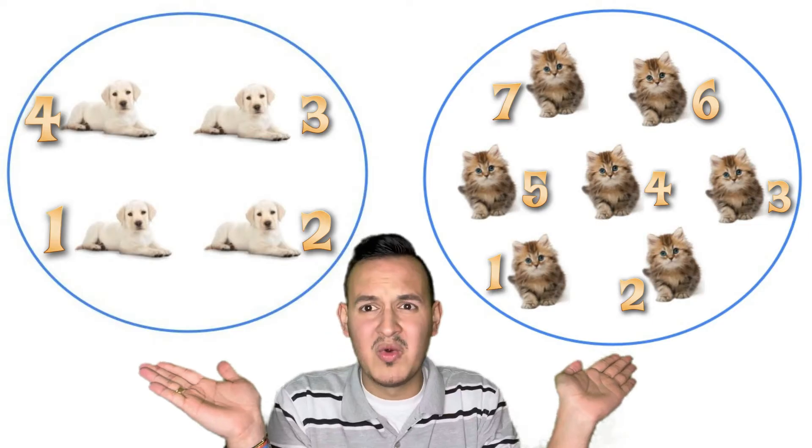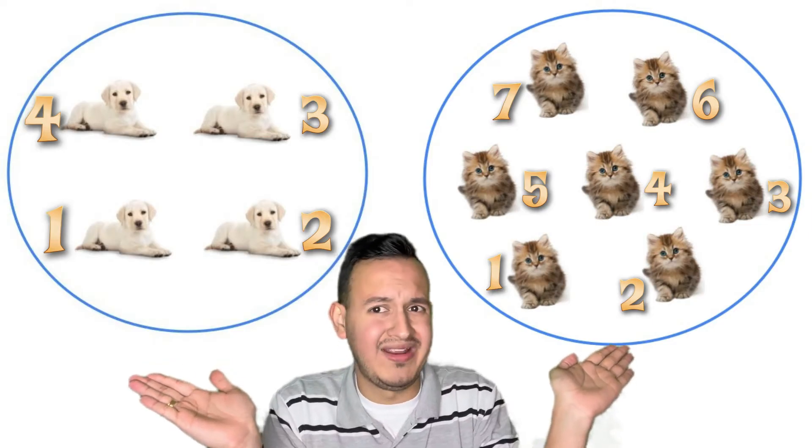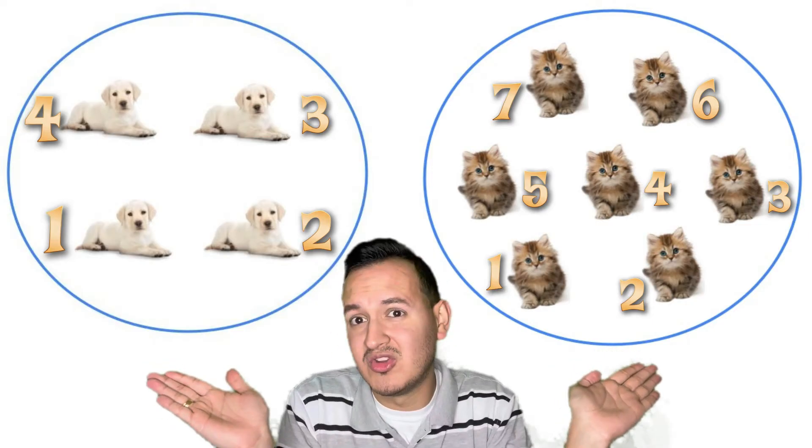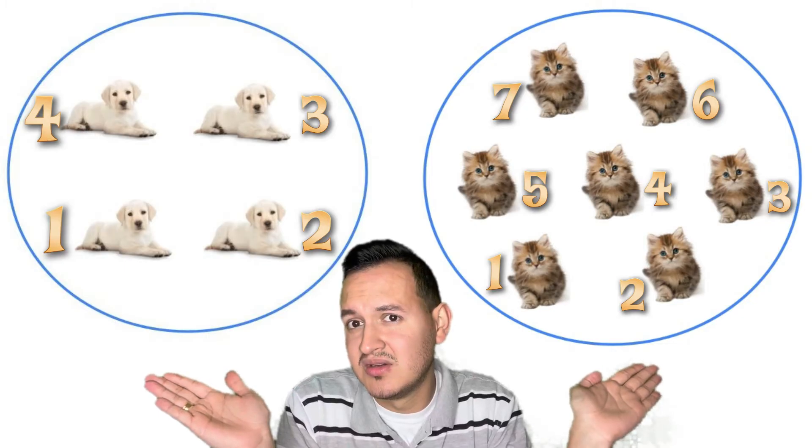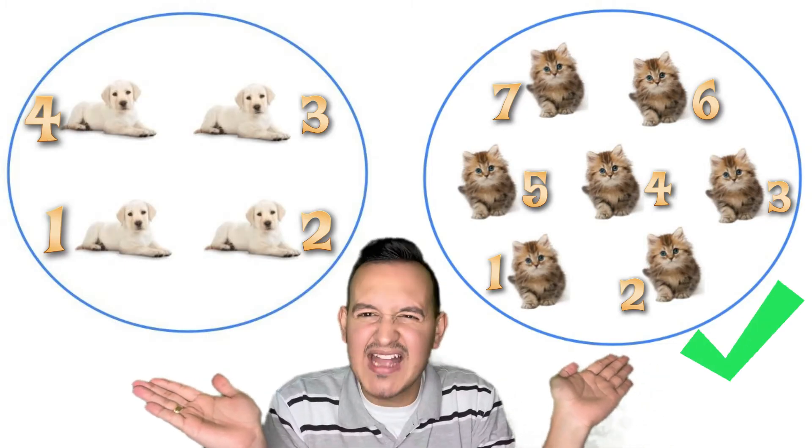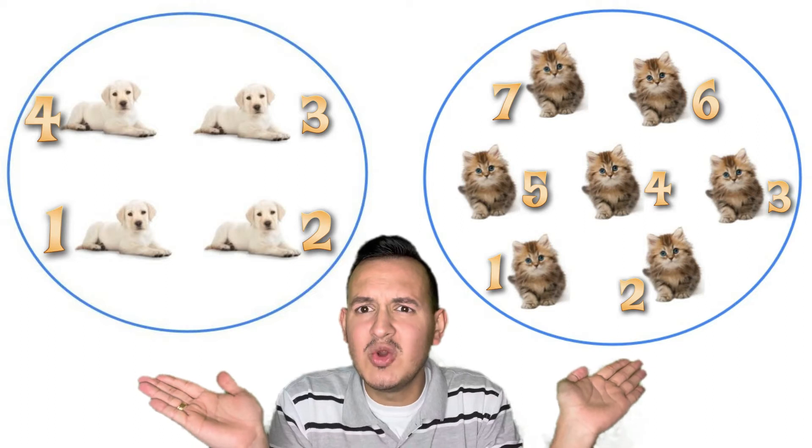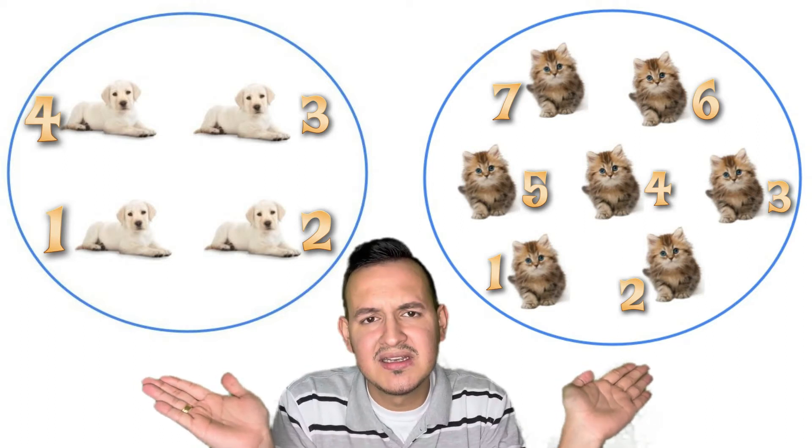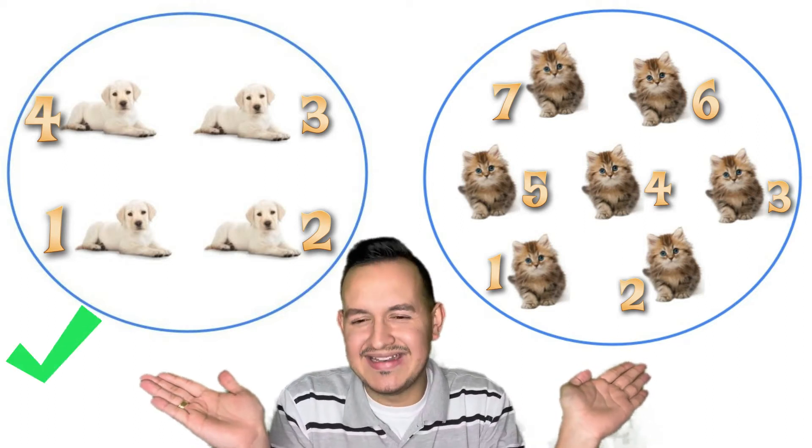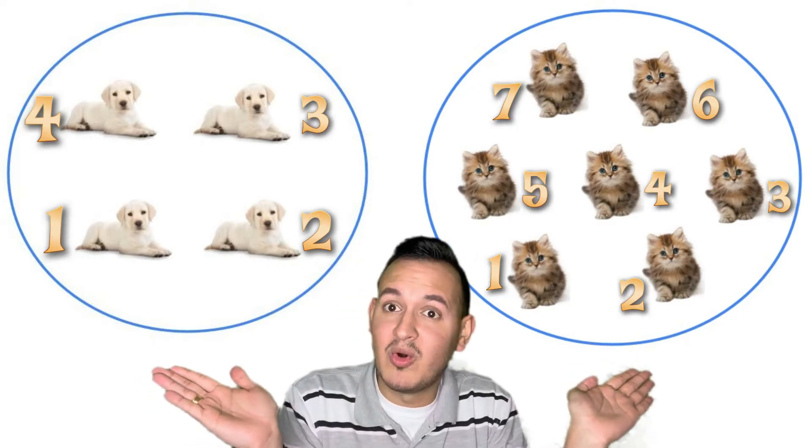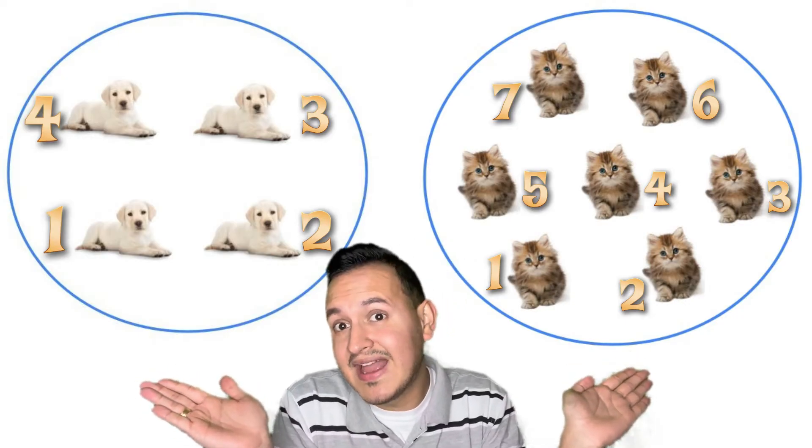Now we have more cats or more dogs? Yes, more cats. Very good. Now which group has less? Yes, less dogs because seven is more than four and four is less than seven. Very good, my friend.